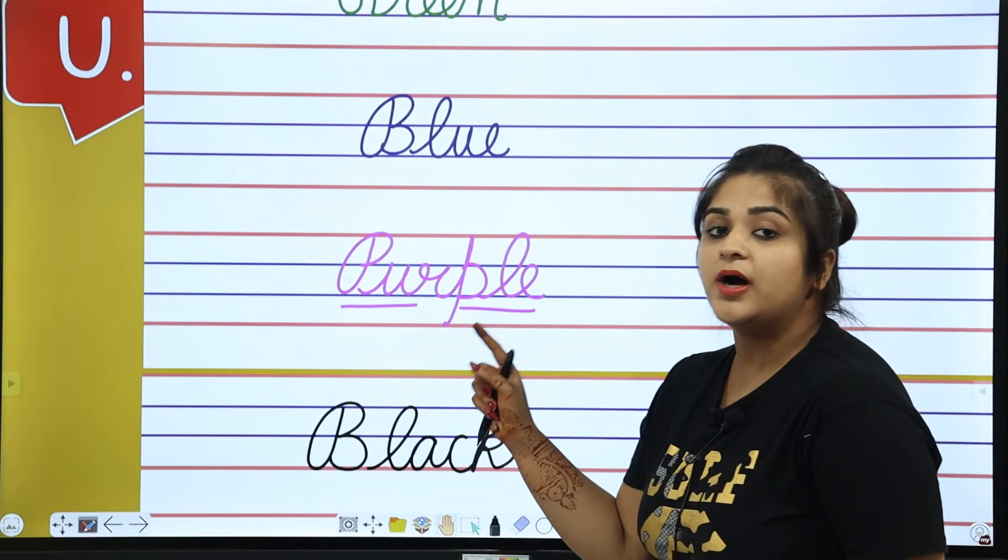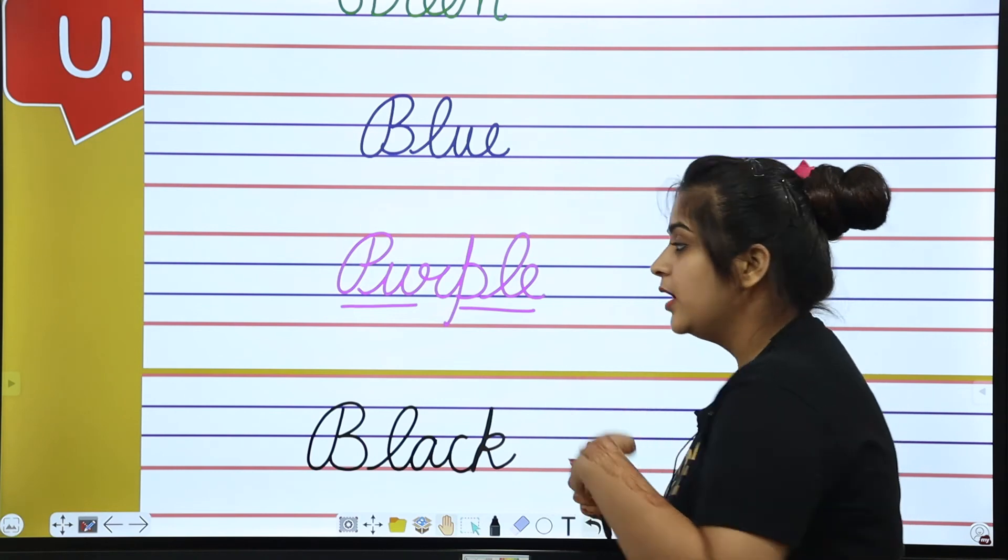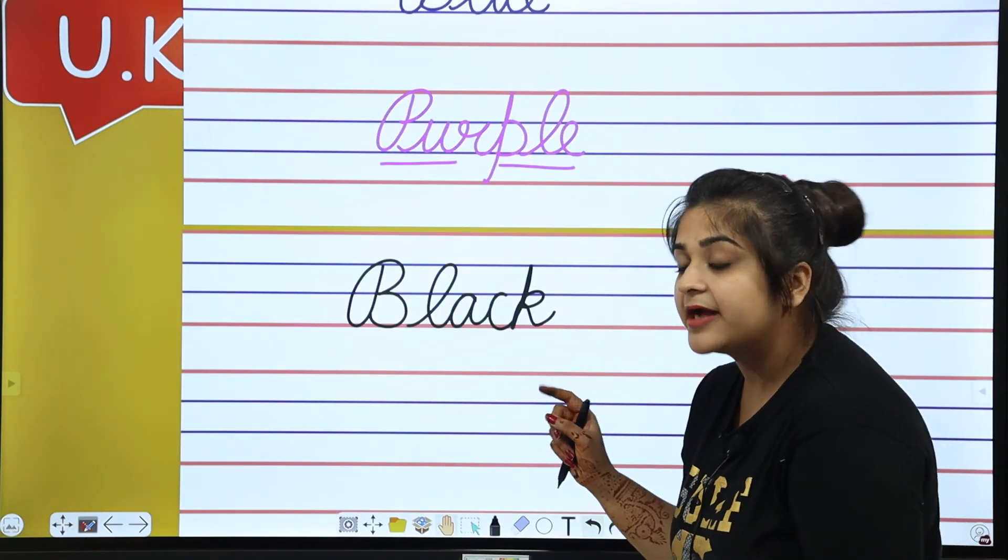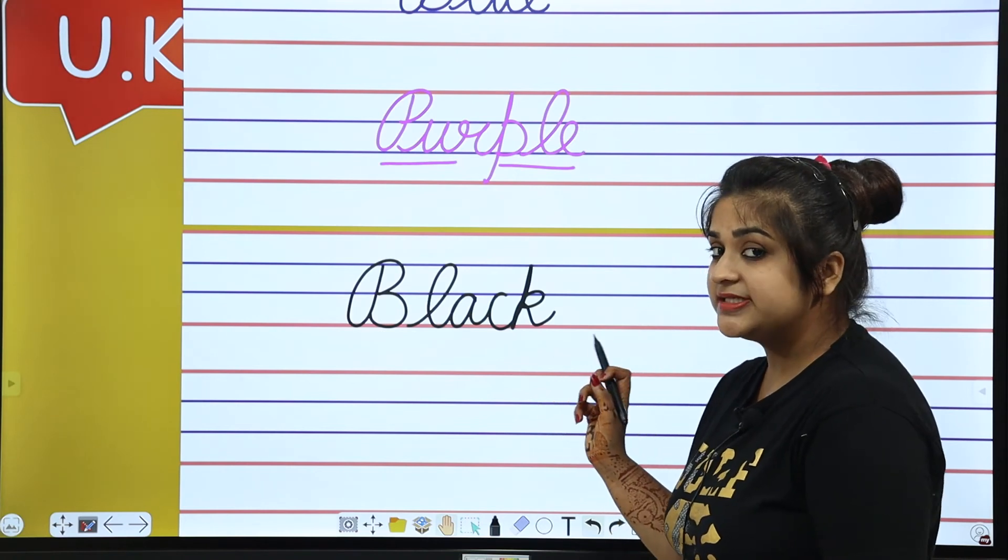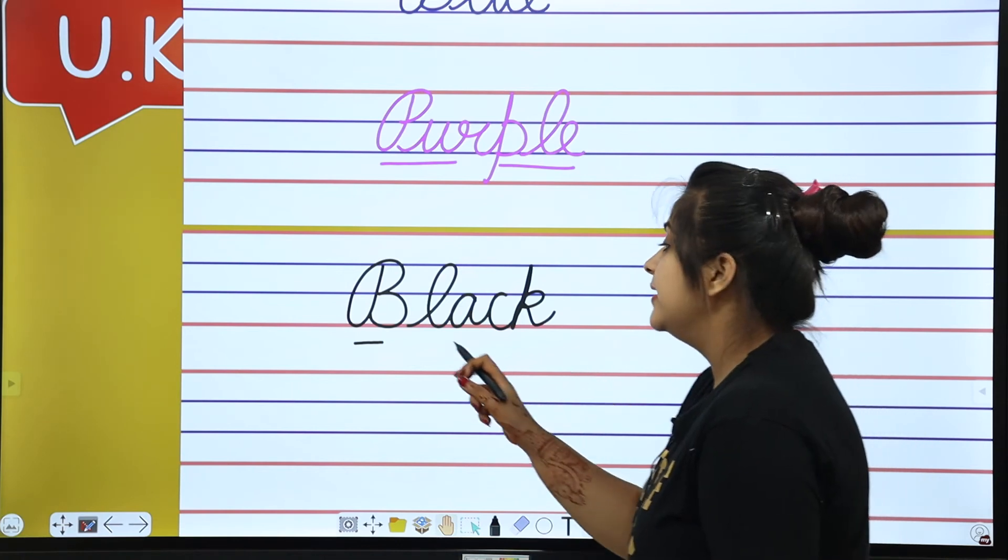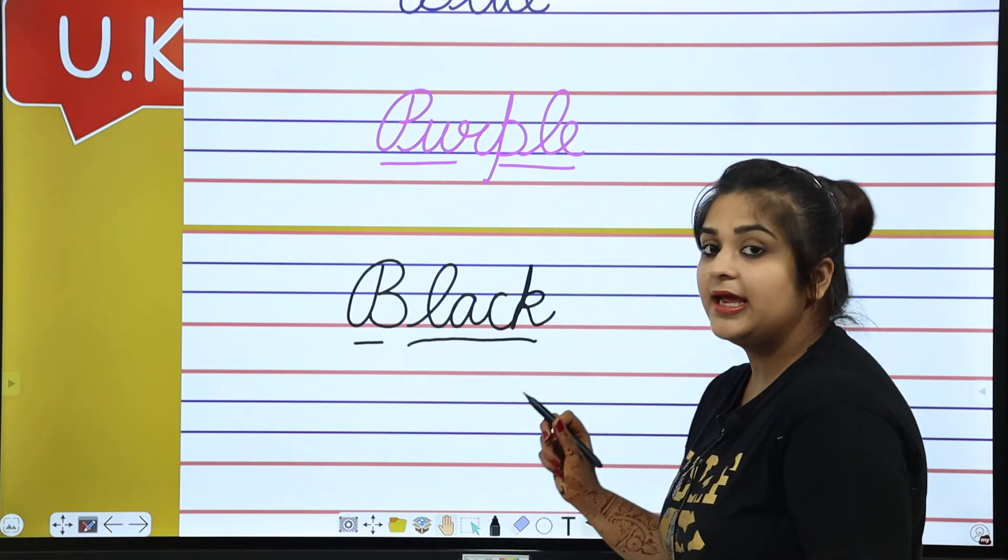Purple. P-U-R-P-L-E, purple. Next is black. Black, which first sound is B, so I write B. B means B, then black. L-A-C-K, black.